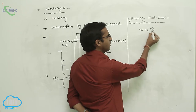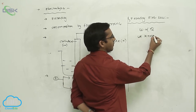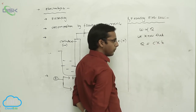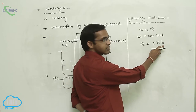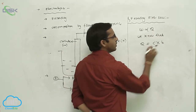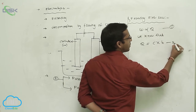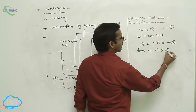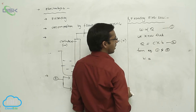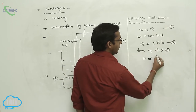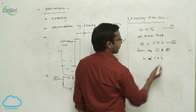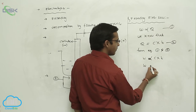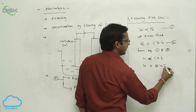We know that Q equals C into T, where C means current and T means time. From combining these two equations, W is proportional to C into T, because Q equals C into T. Removing the proportionality constant, we get a new constant Z, so W equals Z into C into T. Here Z is called the electrochemical equivalent.